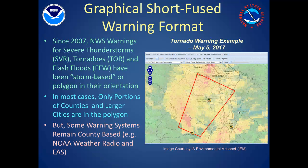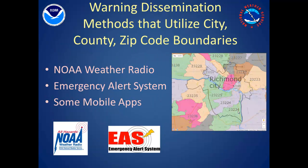Some dissemination systems that are out there, for example NOAA Weather Radio and the Emergency Alert System, use a county-based or a city-based geographic orientation, and they're really not compatible with some of the newer technologies that utilize our polygons. Prior to the early 2000s, NOAA Weather Radio, local media, and the Emergency Alert System were the primary means by which people received short-fused warnings.